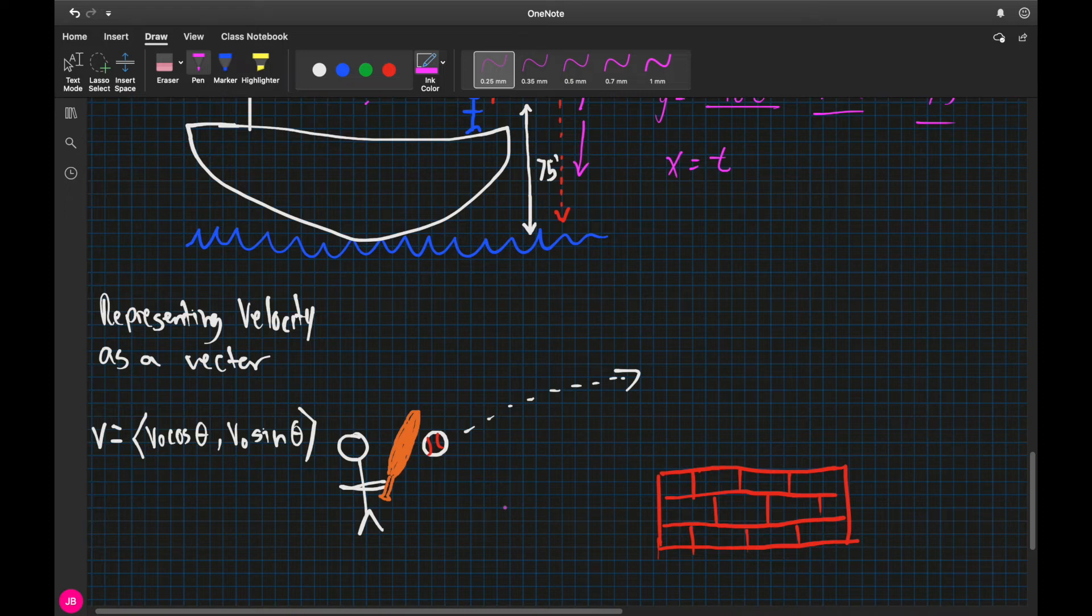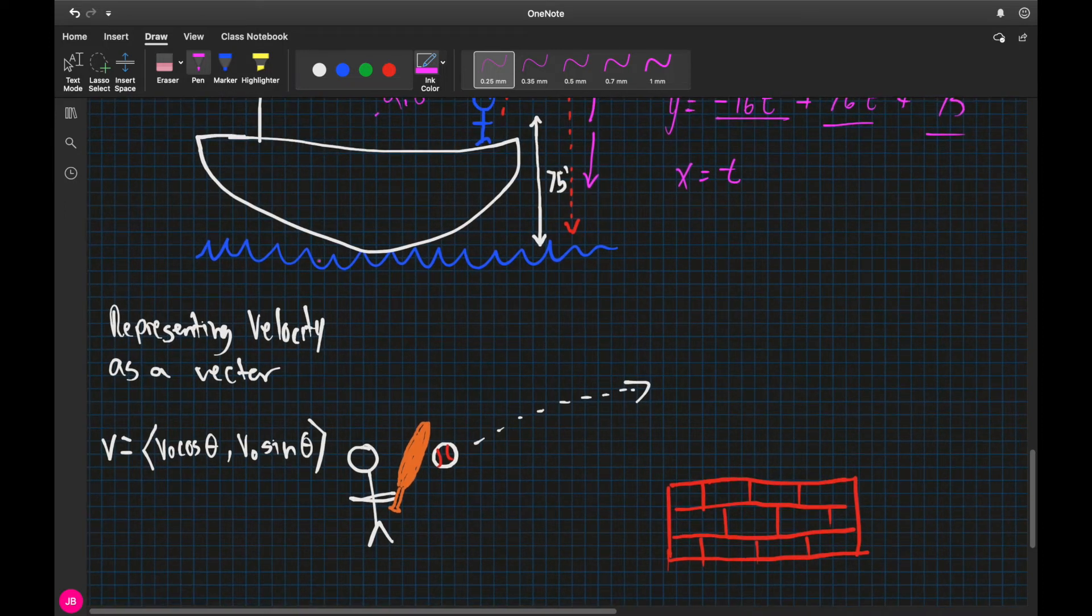When representing velocity as a vector, we're going to use this right here. The V0 times the cosine of theta is going to give us the initial velocity for my horizontal movement, which is going to be my X. And the V0 times the sine of theta is going to give me my vertical movement, which is going to be my Y.